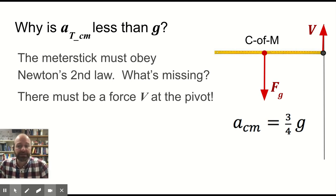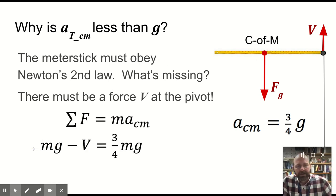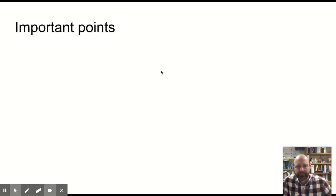And so if you look at this from a standard translational Newton's second law perspective, you have a downward force and an upward force, and the net force is smaller than the force of gravity. Net force equals Ma, and mg minus whatever that vertical force from the pivot point is, is equal to 3 quarters mg. And so that means this vertical force has to be a fourth of mg.